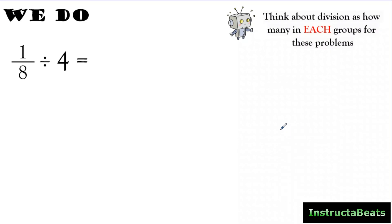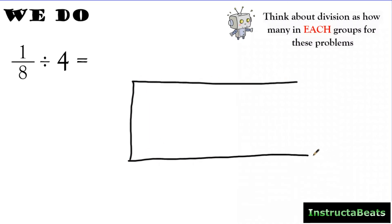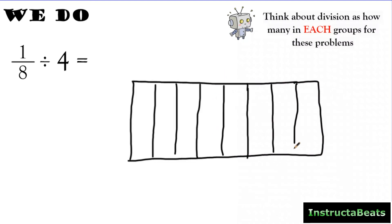Let's apply these steps to another problem — a we do problem. Check the description for a link to guided notes you can use. Larry's friend reminds us we're thinking about division as how many in each group. Step 1: I'm going to draw my 1 eighth nice and big — draw the whole, like a dollar or a cake, and split it into 8 pieces vertically. My numerator is 1, so I'm going to shade in 1 of those eighths. It doesn't matter which one; I always do the one furthest to the left.